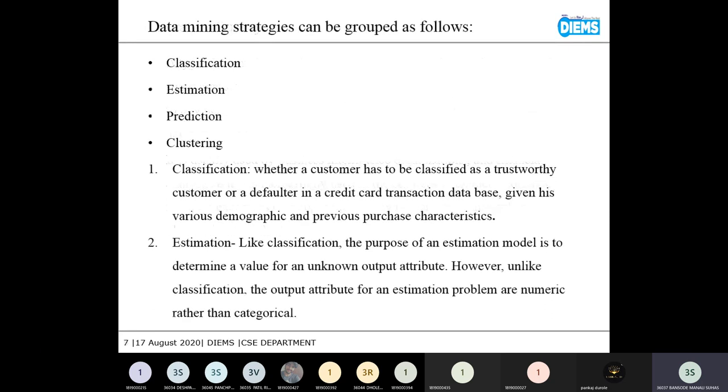So here are the data mining strategies which can be grouped as follows. First is classification followed by estimation. Next is prediction and last is clustering. Classification - I'll again take an example whether a customer has to be a trustworthy customer or a defaulter in credit card transaction. It is based on the classification part. In classification, the output is categorical.